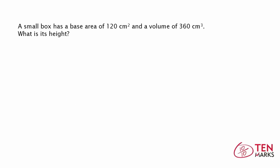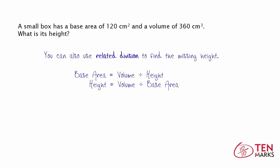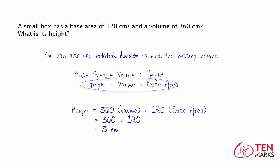You can also find this value by something called related division. In this case, you would use this equation since we're looking for the height: height equals volume divided by base area. Plug in the numbers you know — 360 for volume and 120 for base area. 360 divided by 120 equals 3 centimeters. So again, you see that the height is 3 centimeters.